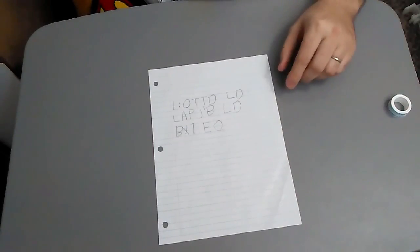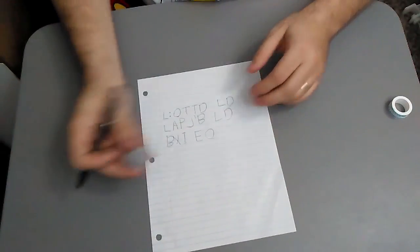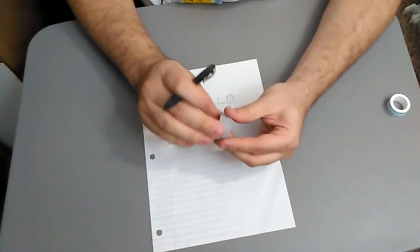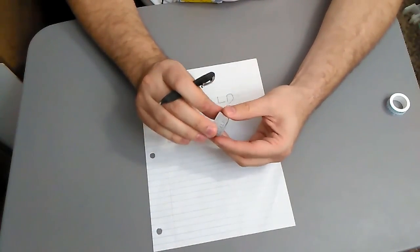And there's my fully encoded message. And then I take this message, and I pass it along to my friend, and they've got their own decoder ring that they were able to print on their own 3D printer.